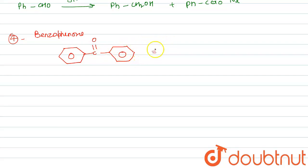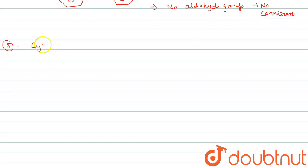Fourth one is benzophenone. No alpha hydrogen present, no aldehyde group present, so no aldol and no Cannizzaro reaction takes place.